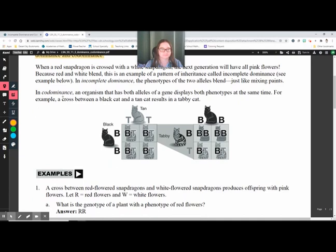In incomplete dominance, the phenotype of the two alleles blend, just like mixing paints. So you can't see just red anymore. You can't see just white anymore. They mush together and become pink or light red. But in the pattern of inheritance called codominance, an organism that has both alleles of a gene displays both phenotypes at the same time.